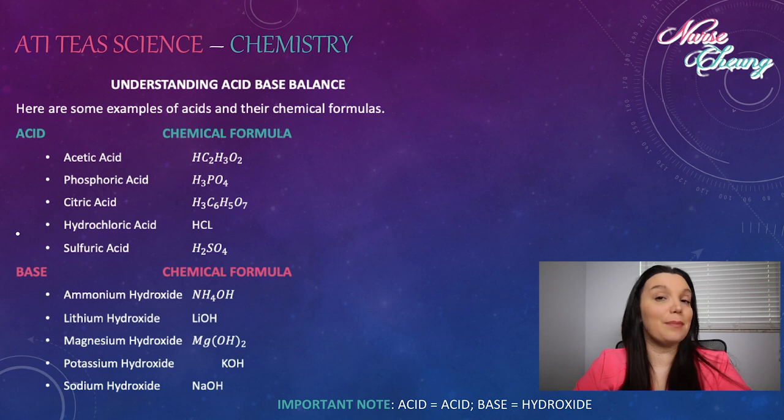Here are some examples of acids and bases and their chemical formulas. Acids have acetic acid, phosphoric acid, citric acid, hydrochloric acid, and sulfuric acid. Bases have ammonia hydroxide, lithium hydroxide, magnesium hydroxide, potassium hydroxide, and sodium hydroxide.